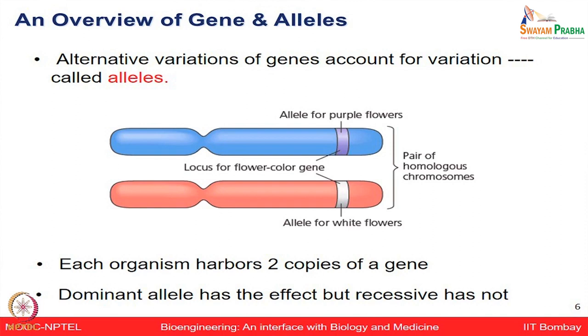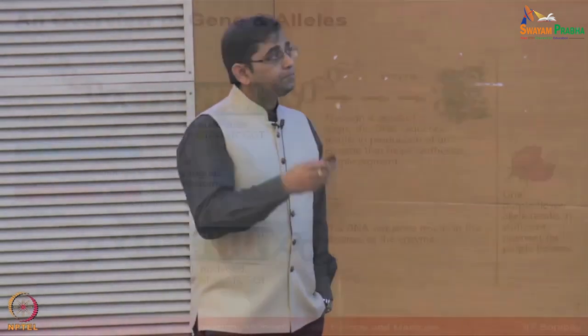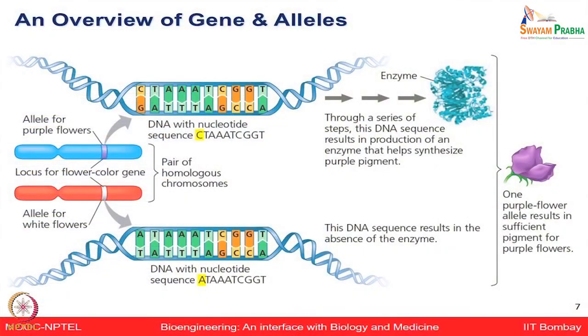Each organism harbors two copies of a given gene. A dominant allele has the effect, but a recessive allele does not show an effect. In the context of purple versus white color, if you look at the gene sequence for purple color versus white color, it is exactly the same — just one base pair change from C to A. That is the only change.